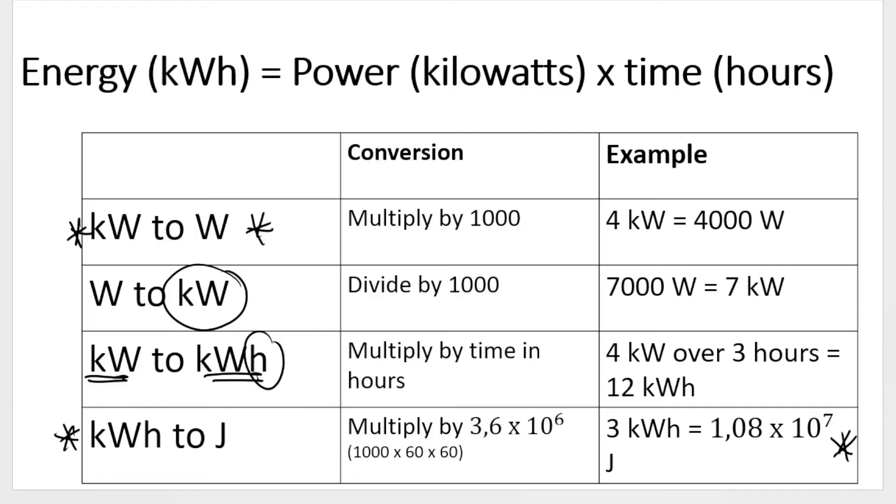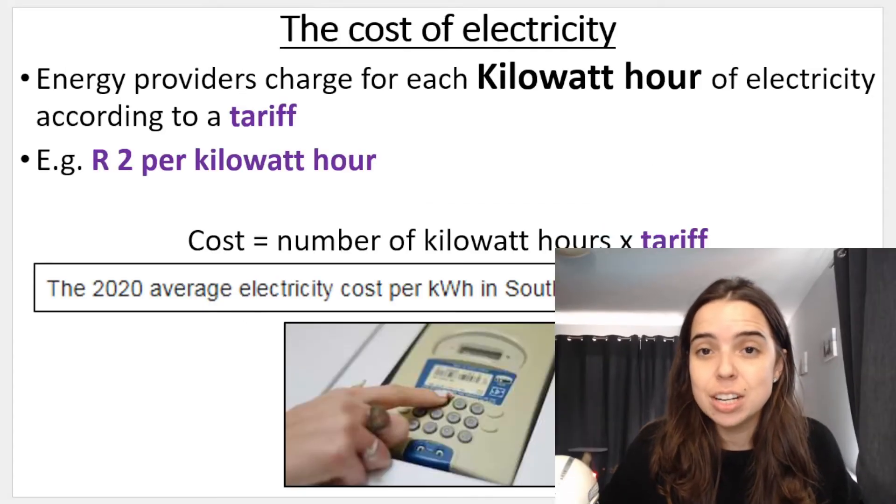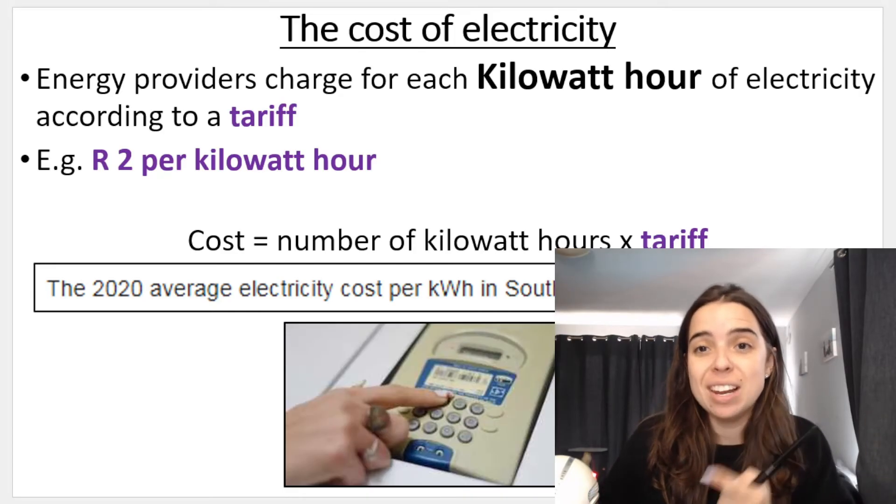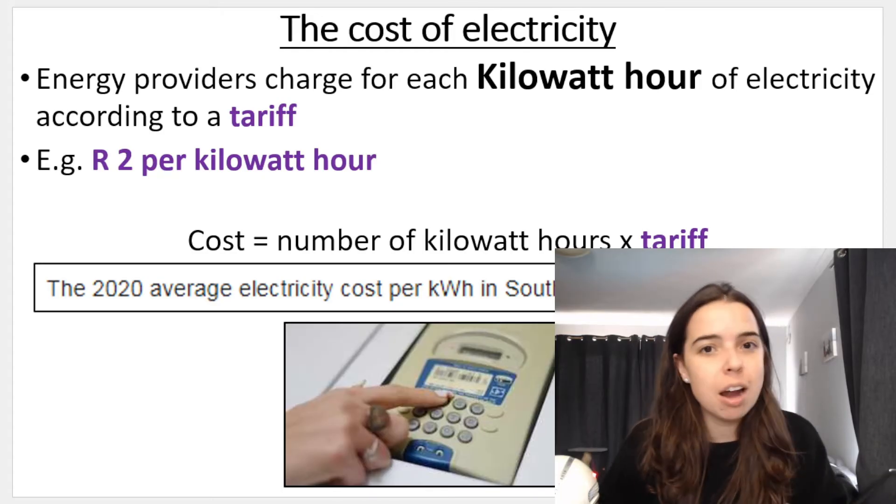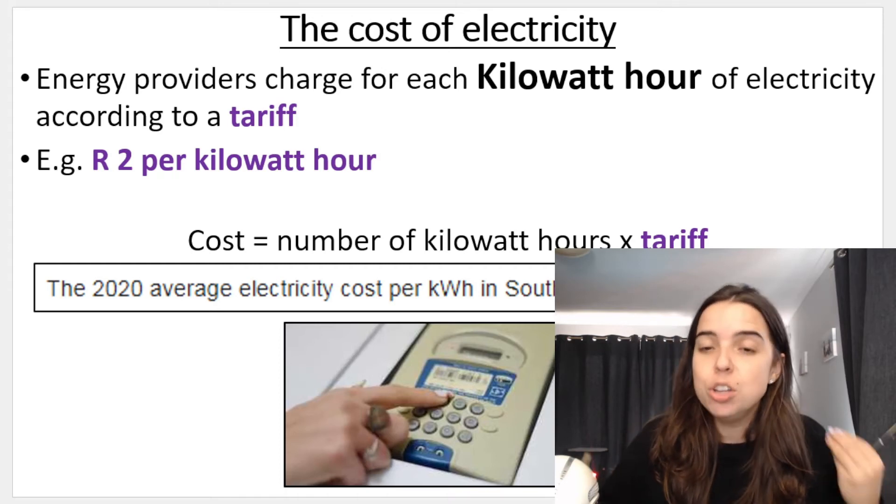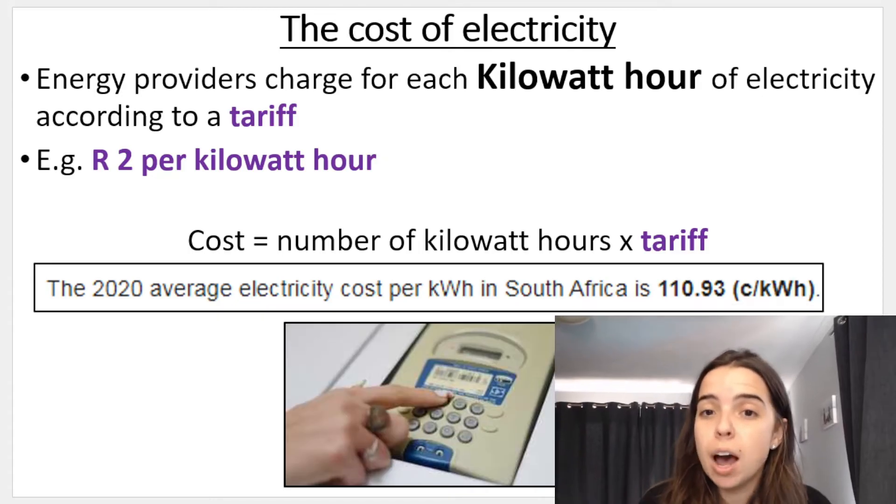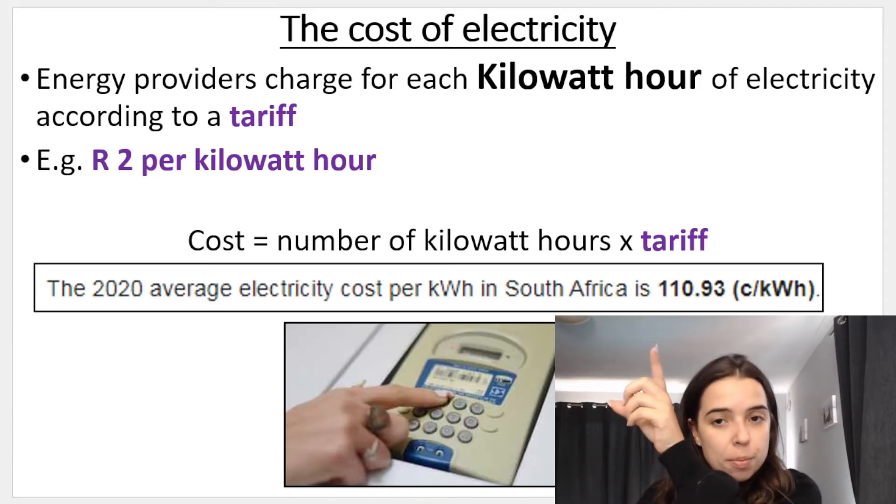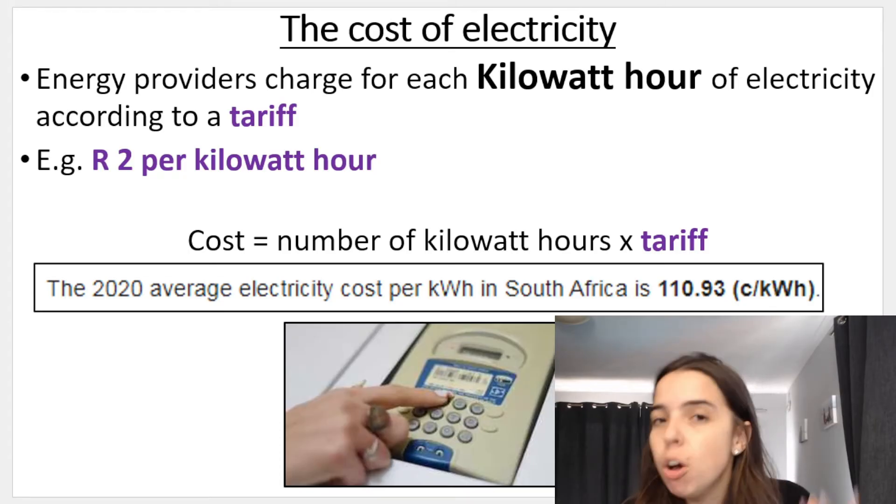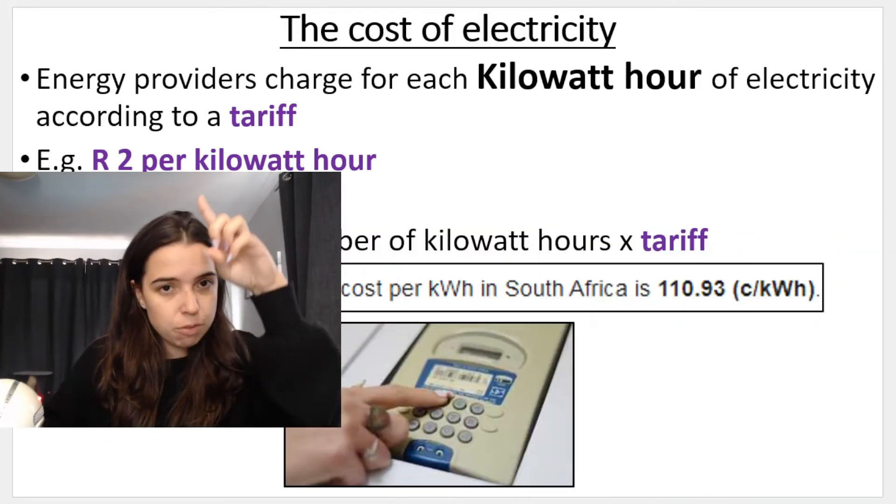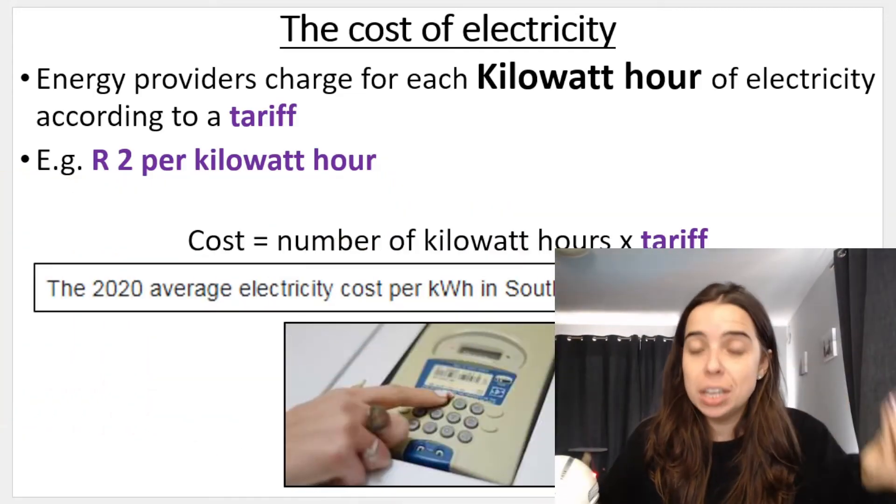To get from kilowatt to kilowatt hours you basically just take your kilowatts, your power, and you multiply it by your time in hours. Now how do you calculate the cost of electricity? Energy providers, ESKOM, whatever, they charge for each kilowatt hour of electricity that we use according to a tariff. So tariff is the amount of money that you pay per kilowatt hour. For example, in 2020 the average electricity cost per kilowatt hour was 110.93 cents. For example, 2 rand per kilowatt hour is the amount that you pay per kilowatt hour.